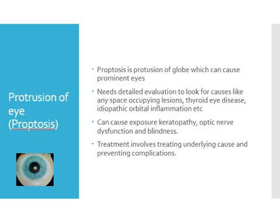Proptosis means protrusion of the eye. Whenever there is proptosis, we need to look for the reason — most commonly it can be due to thyroid eye disease, or we need to look for any space-occupying lesion within the orbit. Once there is protrusion of the eye, the lids may not be able to close, exposing the cornea, which is called exposure keratopathy. With progressive protrusion, there can also be compression of the optic nerve leading to blindness. Treatment of proptosis involves treating the underlying cause and preventing complications like optic nerve compression or exposure keratopathy by relieving orbital pressure through decompression.